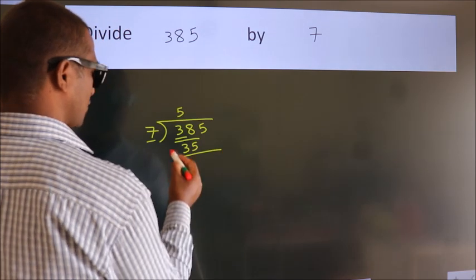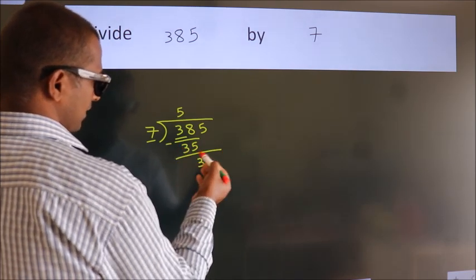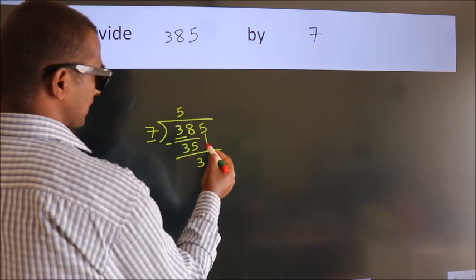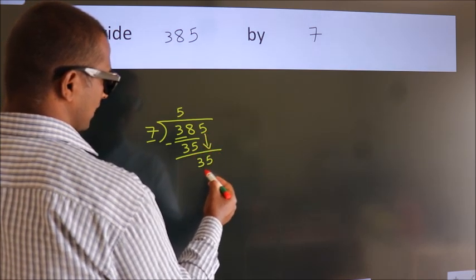Now, we should subtract. We get 3. After this, bring down the beside number. So, 5 down. So, 35.